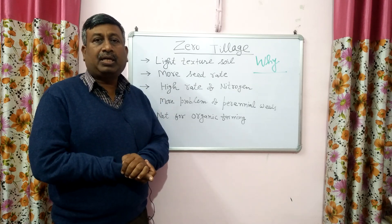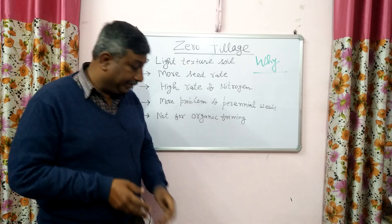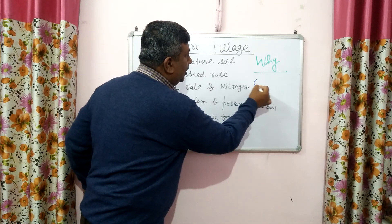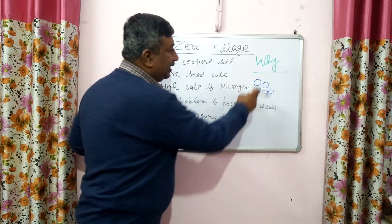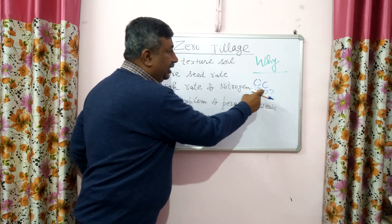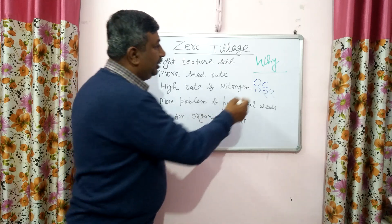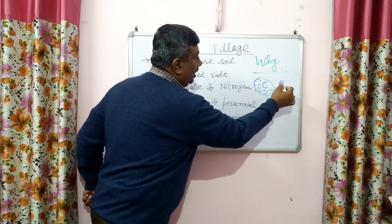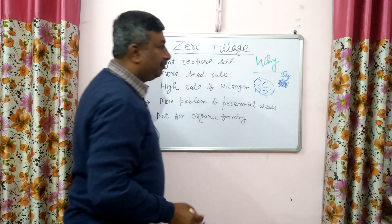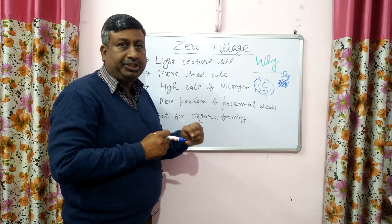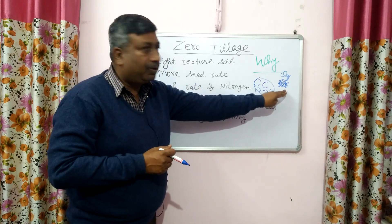In heavy textured soil, clay content is more, and because of this clay content, the attraction force between particles is high. For example, in light textured soil, particles are large and not bound together by force, so when we perform tillage operations they detach very easily by the force of wind and water, causing soil erosion. In heavy textured soil, particles are very small clay particles and their attraction force is very high, so they are not detached easily by tillage implements or wind or water — that's why the problem of erosion is less.